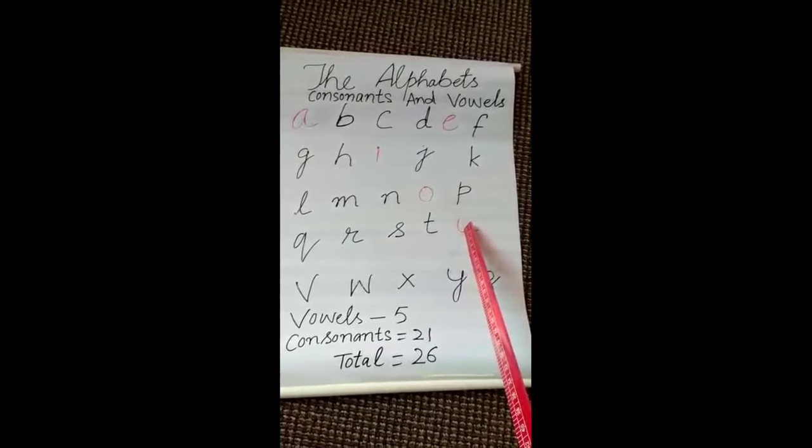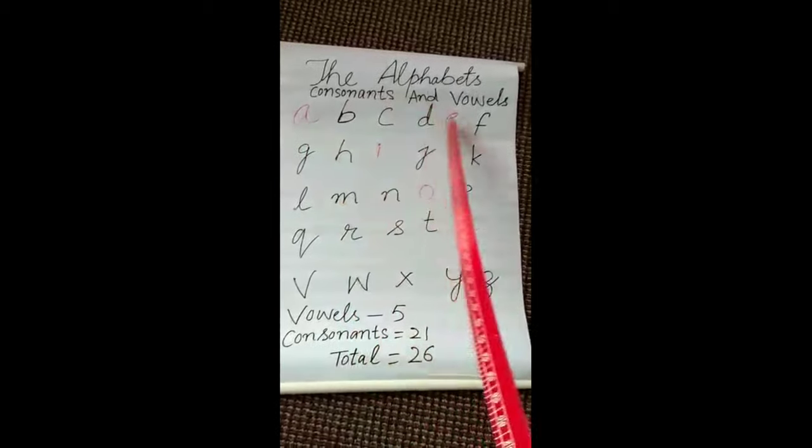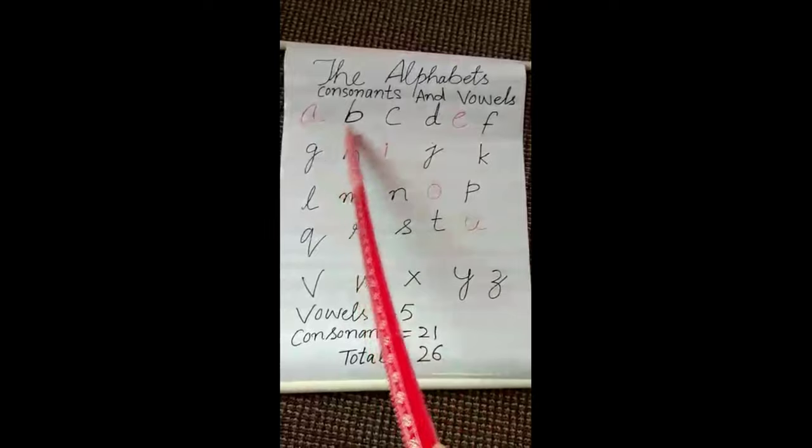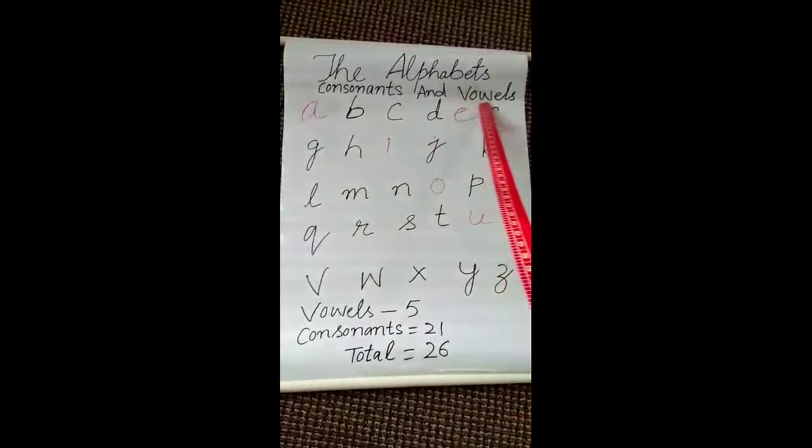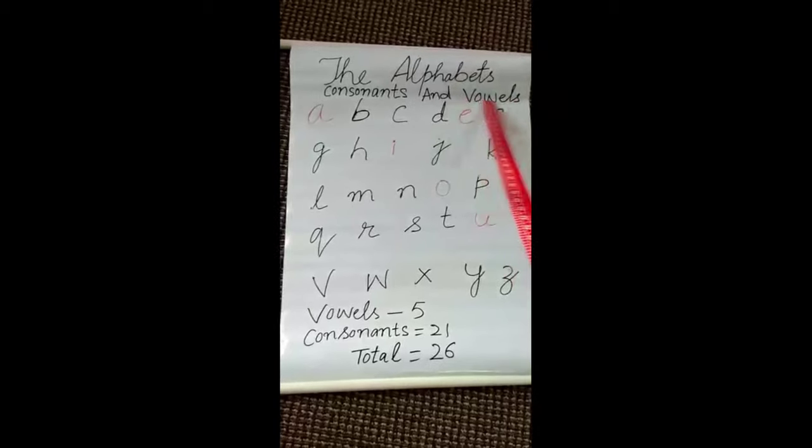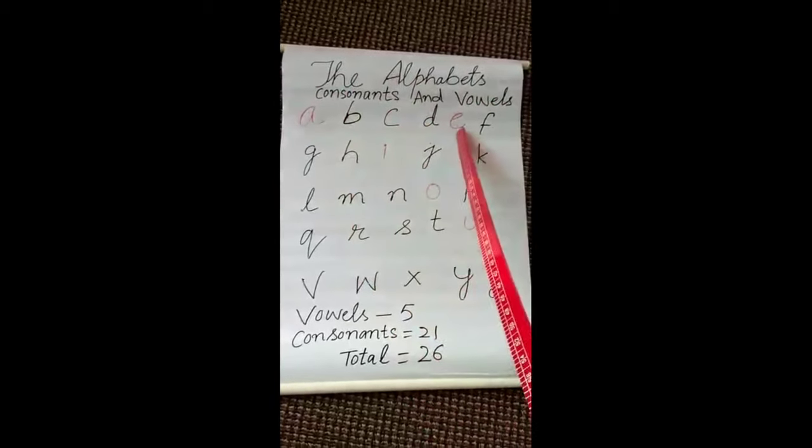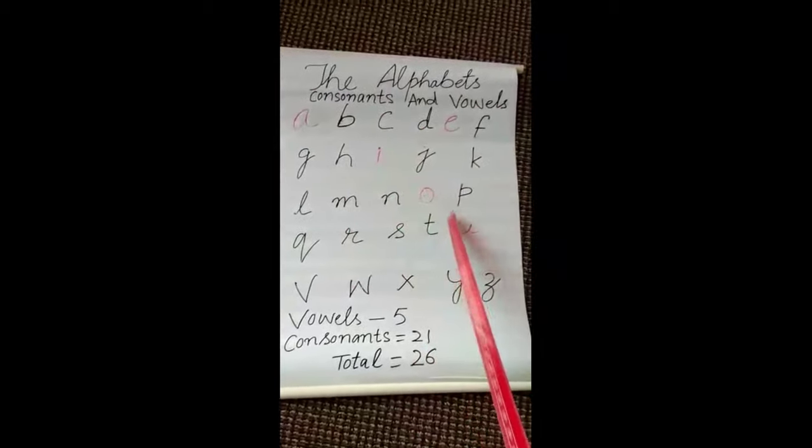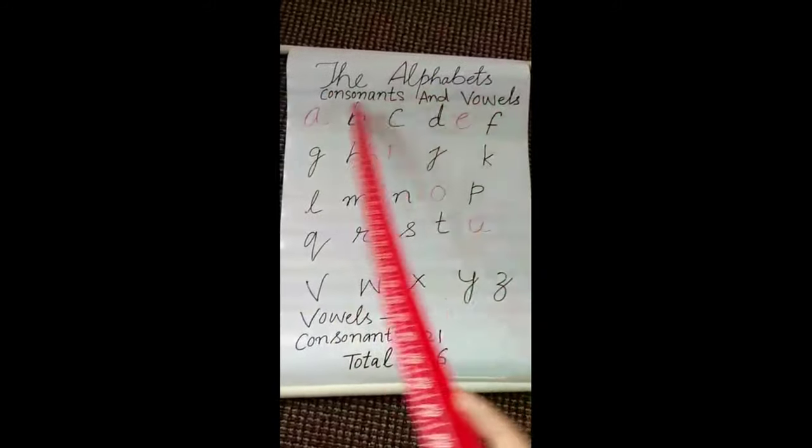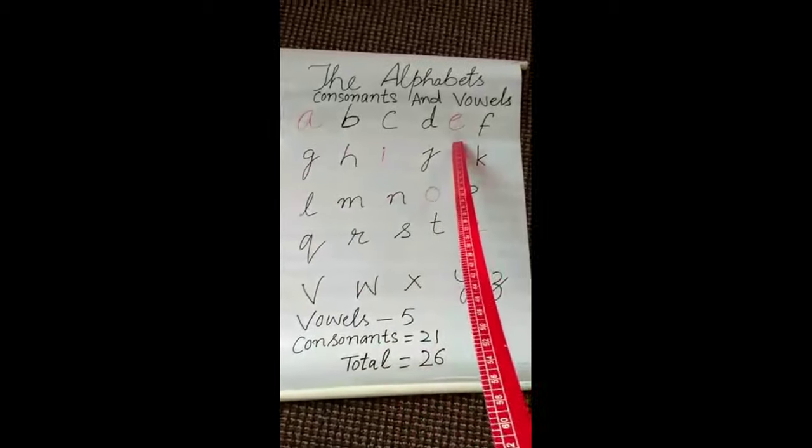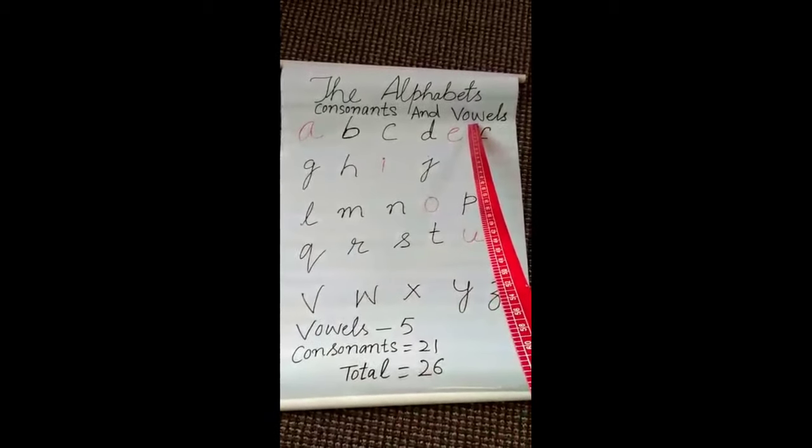Jo ye red colored letters hain, jo mai ne red mein likhe hai, yeh vowels hai. These are vowels: A, E, I, O, U. There are five vowels in the English alphabet.